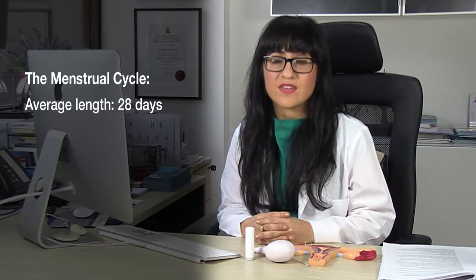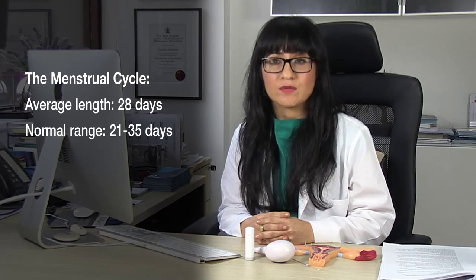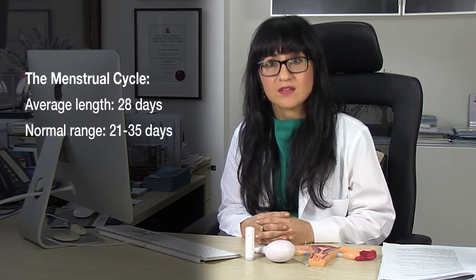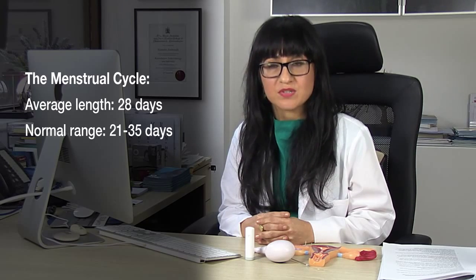The menstrual cycle is a series of phases that the endometrium and the ovary go through. Essentially, the ovary releases an egg after having gone through those steps, and the endometrium, the lining of the uterus, has prepared itself to receive a fertilised egg.